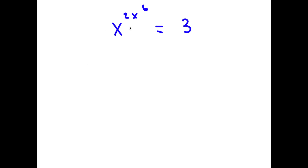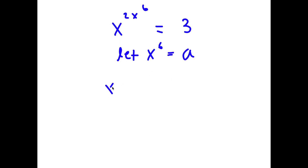So in this problem, I have x to the power of 2x to the power of 6 is equal to 3. I'm going to first start by letting x to the power of 6 equal to a. So this means that x to the power of 6 times 1 over 6 is equal to a to the power of 1 over 6.